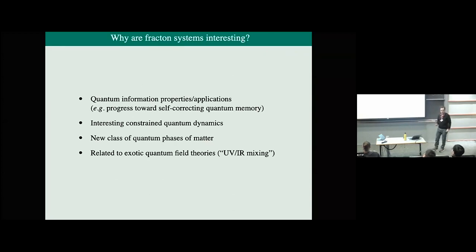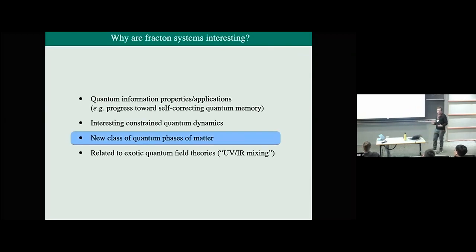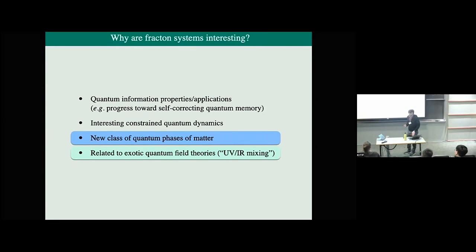Why are these phenomena interesting? There are a number of complementary reasons. One reason to be interested in fractons is for their quantum information properties. Haas's code in particular is an important system in the quest to figure out if it's possible to have a self-correcting quantum memory in a three-dimensional system. These systems have interesting constrained quantum dynamics. I want to focus on the fact that fractons are a new class of quantum phases of matter, and also that they're related to exotic quantum field theories exhibiting UV-IR mixing.